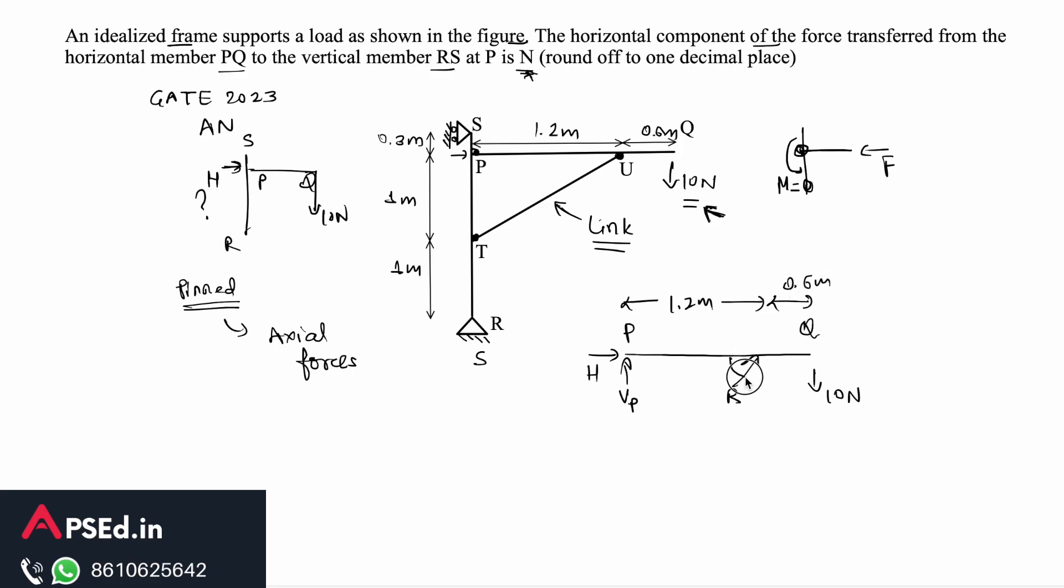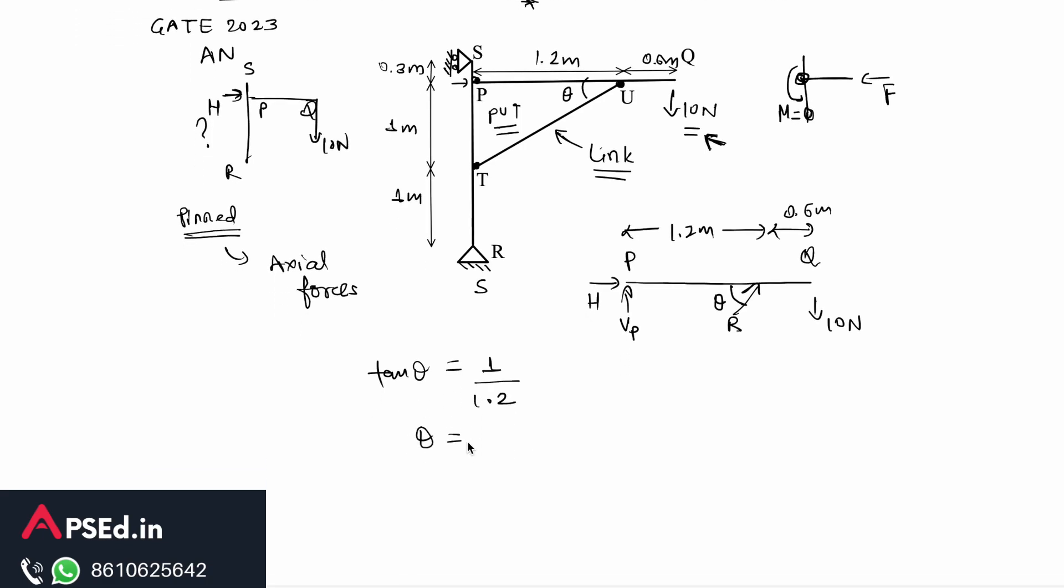Now distances are also known to us. This distance between P and U is 1.2 meter and the distance between U and Q is 0.6 meter. Now because this is an inclined force, let's say this angle is theta. The side of this triangle is equal PUT. We know the sides so from that we can write tan theta is equal to 1 upon 1.2. I will just try to use this direct relation for my problem.